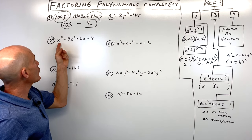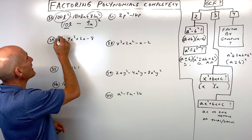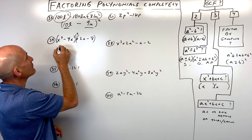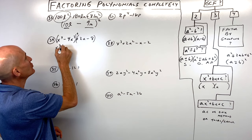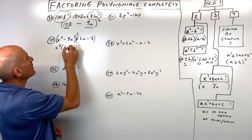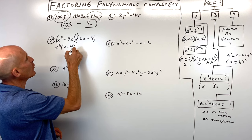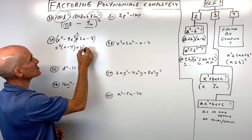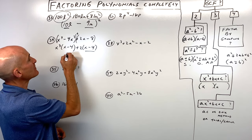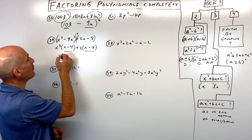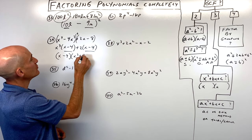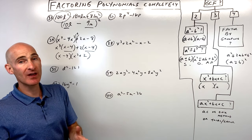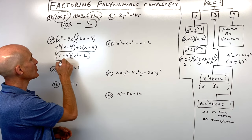Number thirty-four has four terms and no greatest common factor, so we factor by grouping. Factor out x cubed from the first pair, giving x minus 4. Factor out 2 from the second pair, also giving x minus 4. Factor out x minus 4 to get x minus 4 times x cubed plus 2. If this had been x cubed plus 1, that would be a sum of two cubes and we could factor further, but in this case we can't.